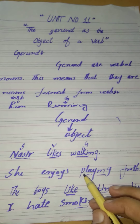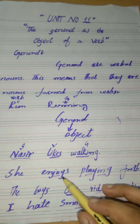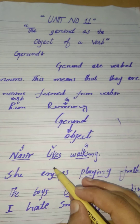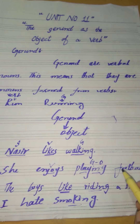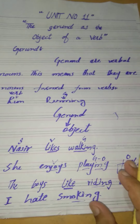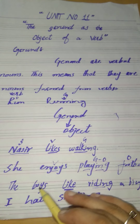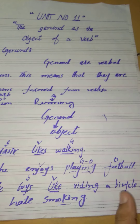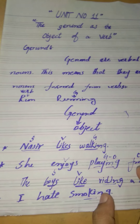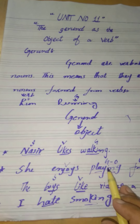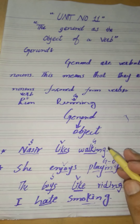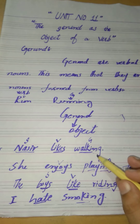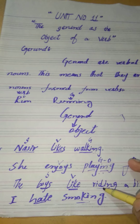Remember, we will use gerund as an object after the verb. 'The boys like riding a bicycle' — 'boys' is the subject, 'like' is the verb, and 'riding' is the gerund as object. 'I hate smoking' — 'hate' is the verb and 'smoking' is the gerund as object. You can see that the gerund with -ing is used at the end of the sentence as the object.